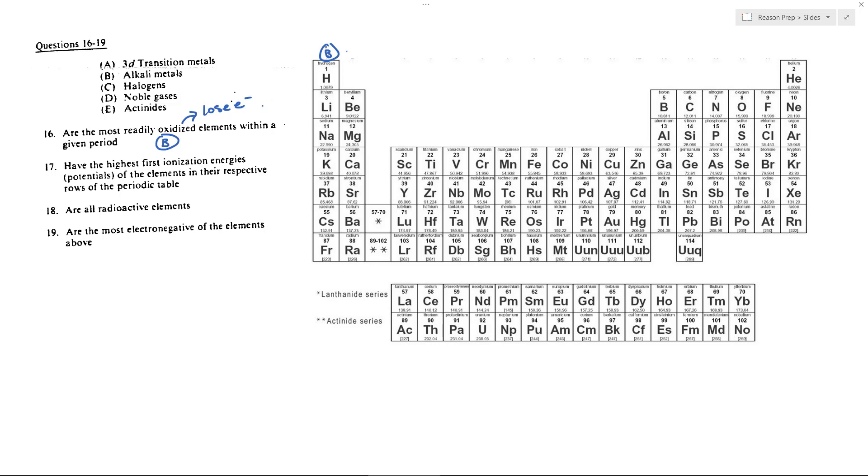We're going to swing now to the other side of the table into our non-metals because non-metals don't want to lose electrons. They either want to gain electrons or they don't want to lose anything at all. Think of your noble gases. This is going to be choice D.